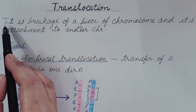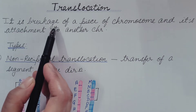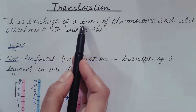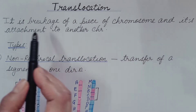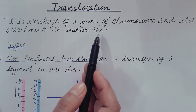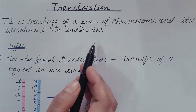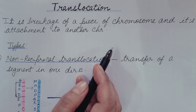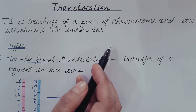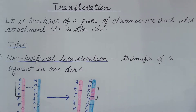What is translocation? It is the breakage of a piece of chromosome and its attachment to another chromosome. From one chromosome, a segment breaks off and then attaches to a different chromosome. This is known as translocation.